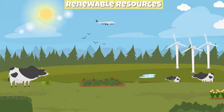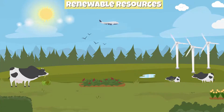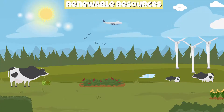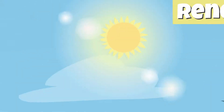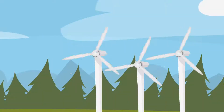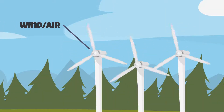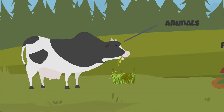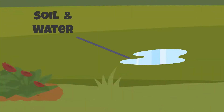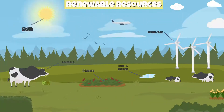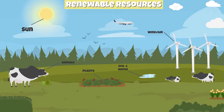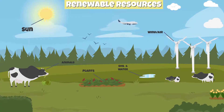Some examples of renewable resources include the sun, wind, air, plants, animals, soil, and water. They all produce little waste and are continuously produced by nature.